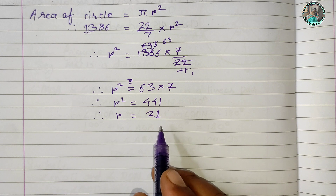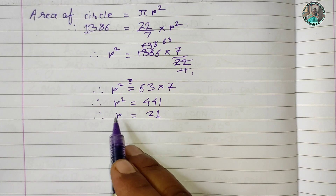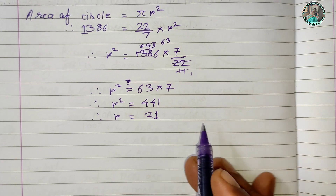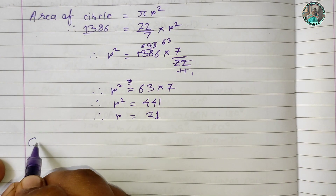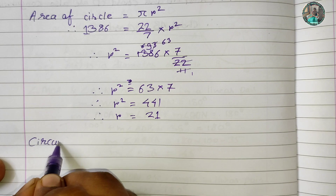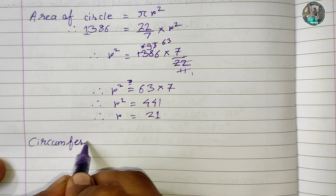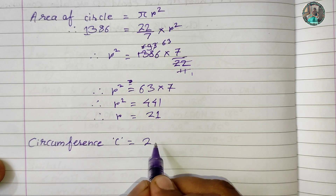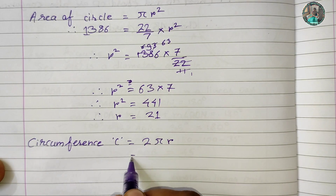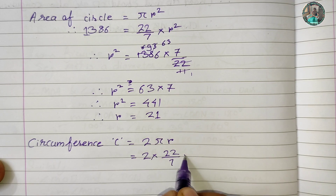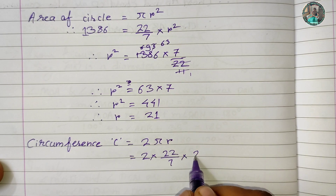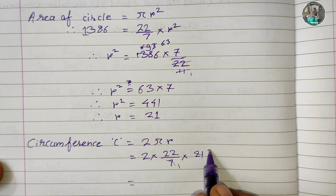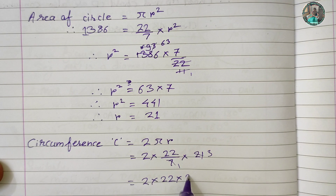r² = 441, r = 21. Square root of 441 is 21. Circumference = 2 × π × r = 2 × (22/7) × 21. Since 7 divides into 21, it gives 3. So it is 2 × 22 × 3.